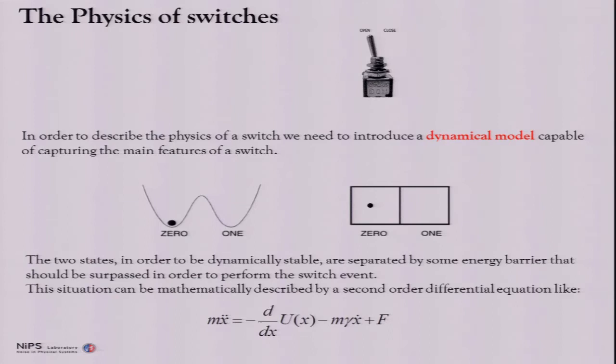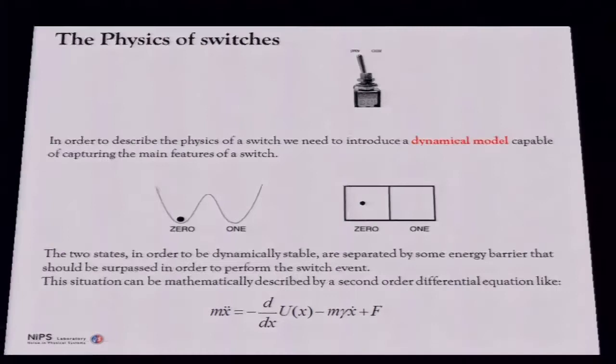In order to describe the physics of a switch, we need a dynamical model. So, we can use a bistable potential in a Newton-like approach, equation of motion approach. Or, you can use the usual system with a movable set just to describe the difference between 0 and 1. Let's focus a little bit on this because it's more rich as a system. So, in order to describe the dynamics, I need to move the ball from this well to this well. So, this is a switch event. And this can be described mathematically by a second order dynamical equation. So, M is the mass of the particle. This is, U is the potential energy. And then I have an equation that drives the dynamics.